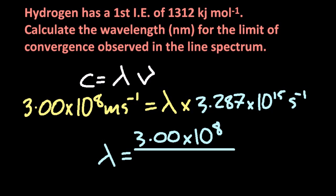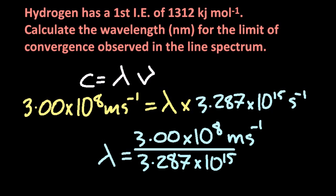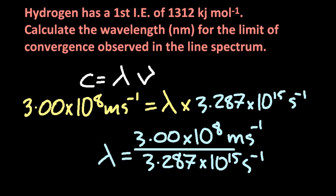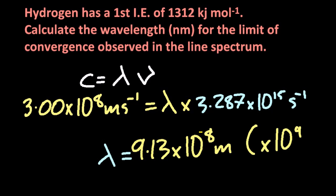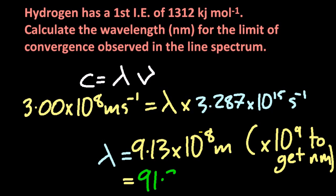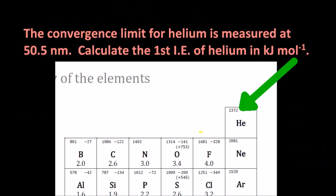When we calculate this, the answer comes out in meters, but it's supposed to be in nanometers. Since there are a billion nanometers in a meter, we convert accordingly. The result is approximately 91 nanometers — the same as the limit of convergence seen in the first animation.